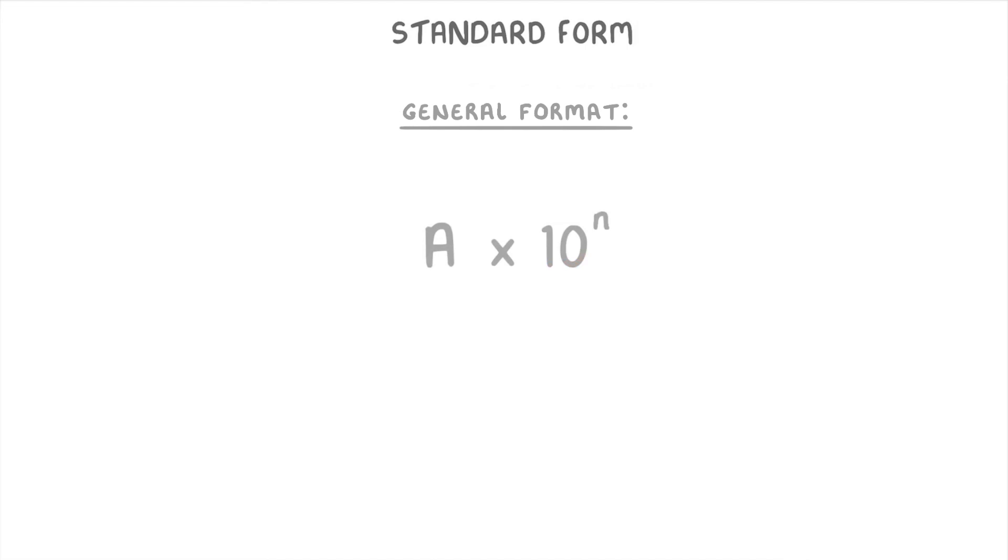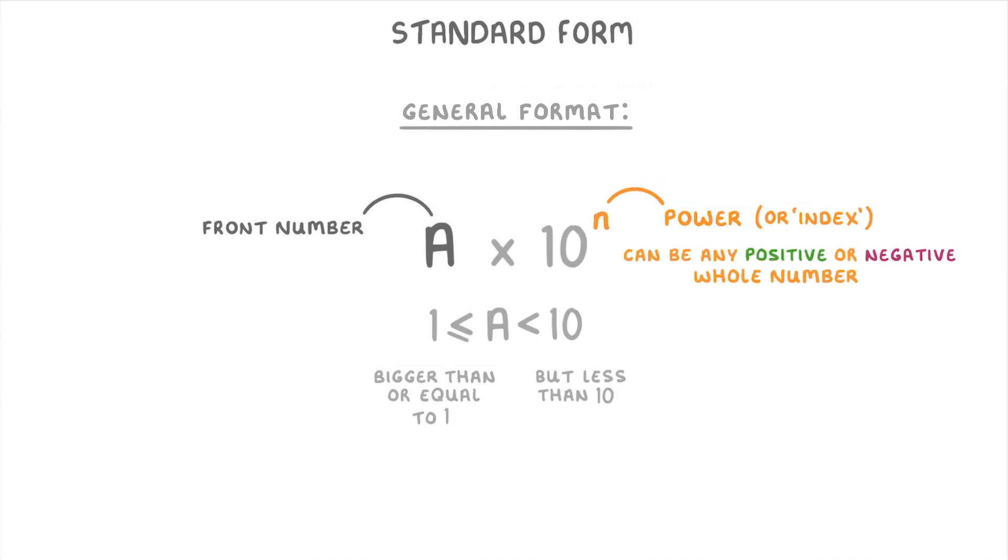The general format is A × 10^n, where A, which we can call the front number, is a number bigger than or equal to 1 but less than 10, while n, which we call the power or the index, can be any positive or negative whole number.